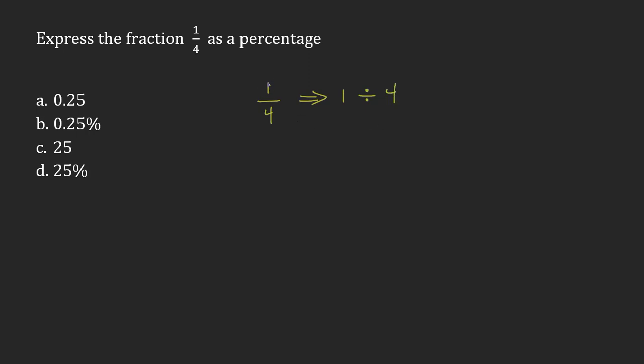So it's the top, the numerator, divided by the bottom, which is called the denominator. Now this makes it really easy if you have a calculator. So 1 divided by 4, if you type that in and you hit equals, you're going to get 0.25.